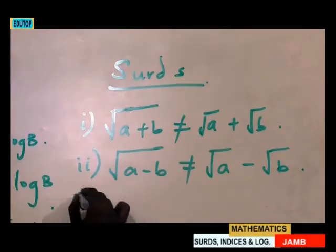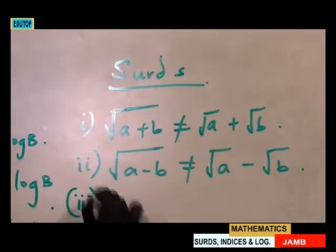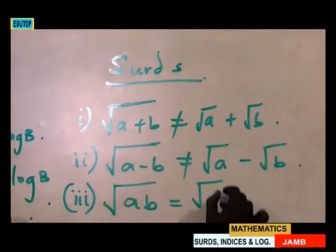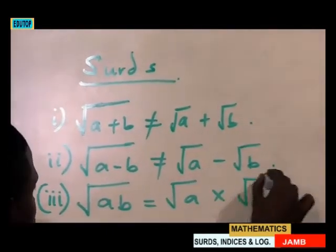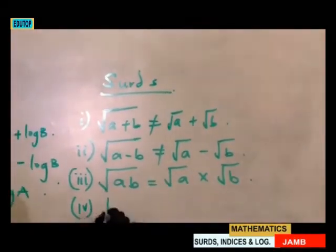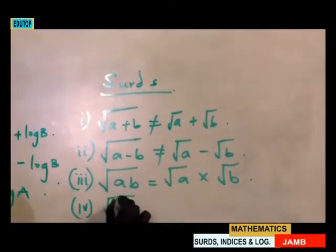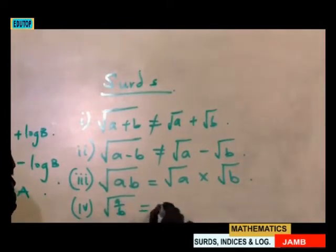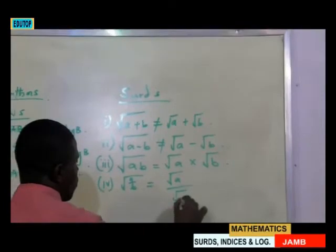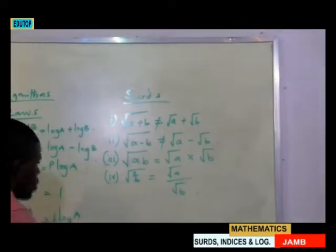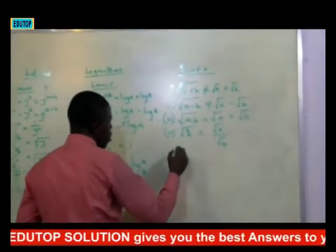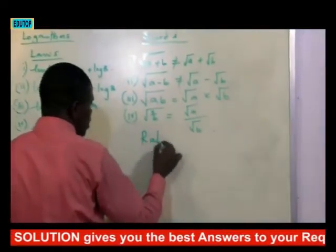Square root of (a times b) can be written as square root of a times square root of b. And square root of (a divided by b) is also the same as square root of a over square root of b. This is what they call rationalization.